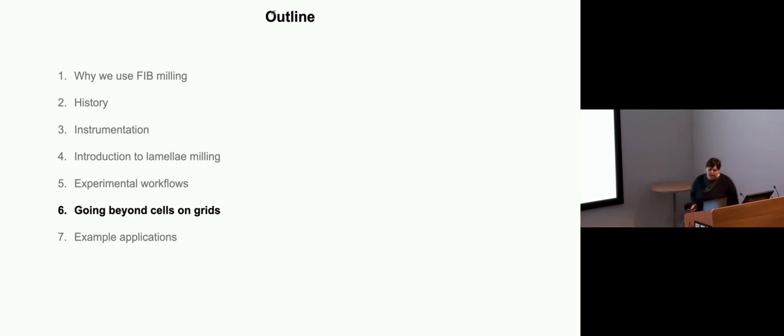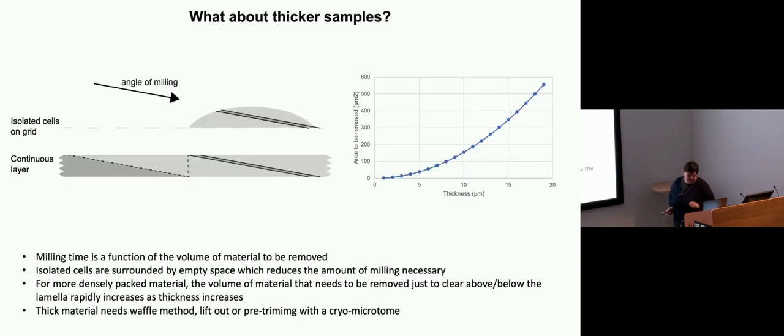Now, coming back to my workflow outline again, I want to talk a bit more about some of the slightly more, so far, all the cells on the grid, I think that's a fairly routine approach. Now talking a bit more about how you go on to look at thicker samples and prepare them for tomography. I want to start with this illustration to highlight some of the problems of milling thicker samples in the same approach as you'd use for cells on grids.